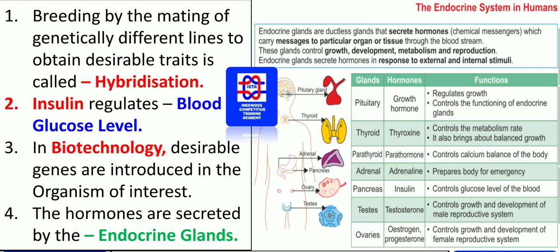Hormones are secreted by the endocrine glands. The pituitary gland secretes growth hormone. The thyroid gland, shaped like a butterfly, secretes thyroxine. The adrenal glands are located just over the kidneys and release adrenaline. The pancreas releases insulin, the testes produce testosterone, and the ovaries produce progesterone and oestrogen.